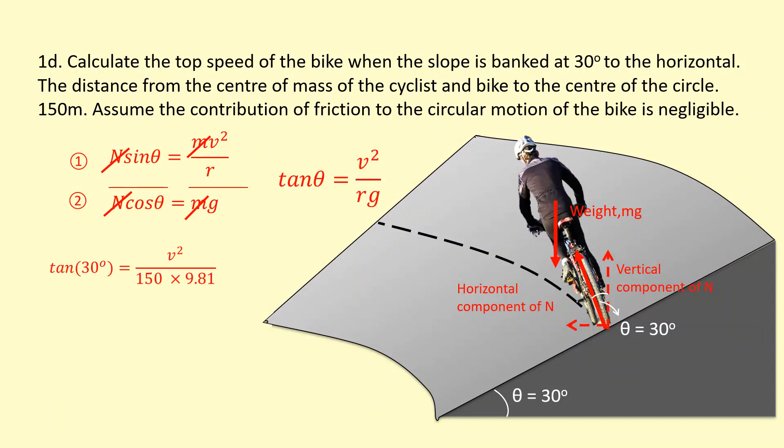Let's put the numbers in. We've got 30 degrees here. V is what we're trying to find. We've got the distance of the center, which is 150 meters, 9.81, and you get a speed of top speed of 29.1. So if you start going faster than this, you're going to start moving outwards.